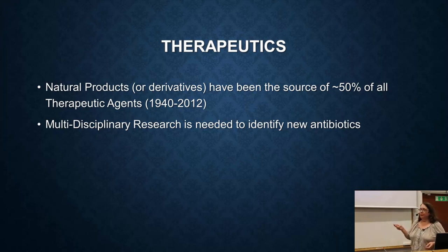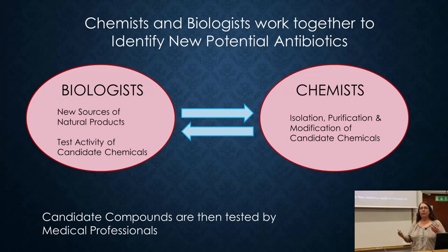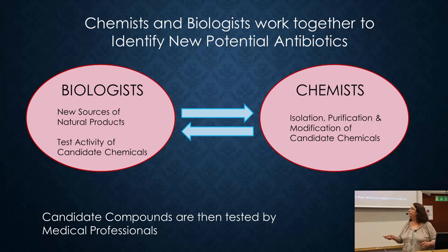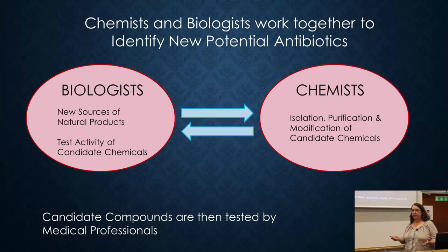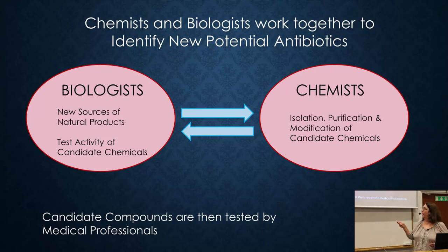This kind of approach needs multidisciplinary research. You need biologists who find new sources of antibiotics and initial hints that something might work, which are then given to chemists who can modify and improve those compounds. They go back to the biologists for further testing, back and forth, until you have a strong candidate that's passed on to medical professionals for animal and human testing.